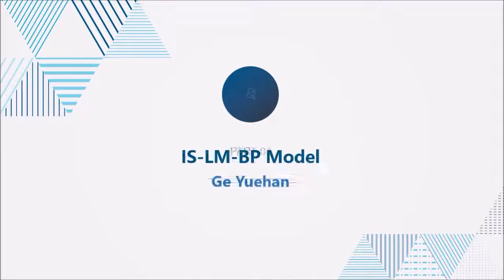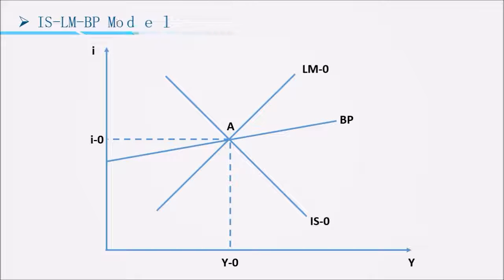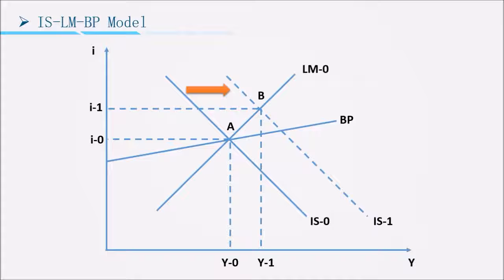Hi, this is Ge Yohan, and I'm going to talk about the IS-LM-BP model. For fiscal policy, the U.S. Congress approved legislation to increase government spending in 2018 and 2019. This will shift the IS curve to the right, raising the interest rate and capital inflow. However, the rise in exchange rate will reduce net exports and shift the IS curve back to the left.